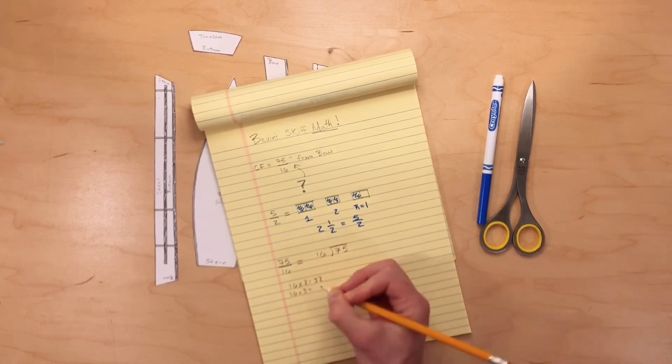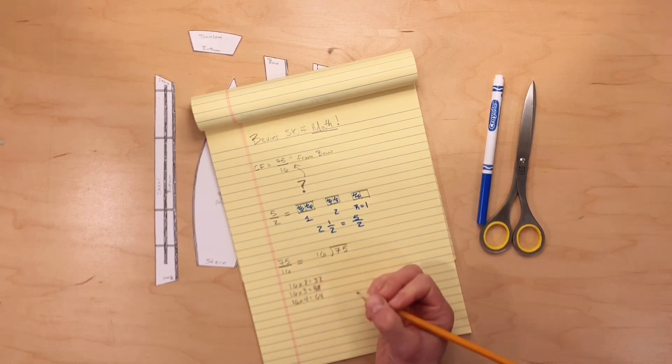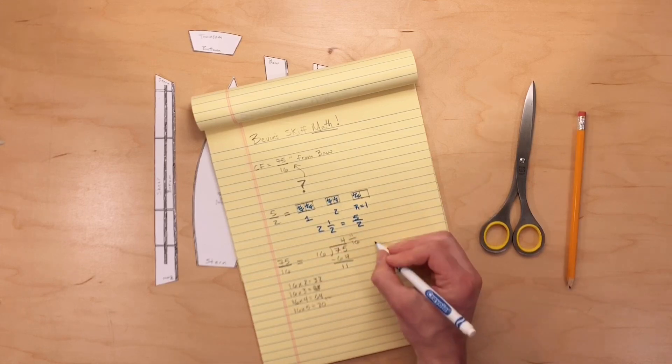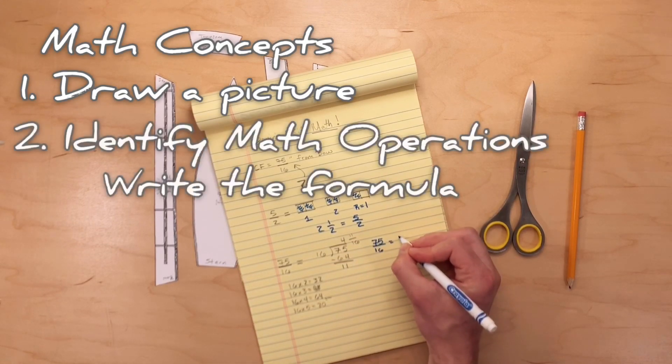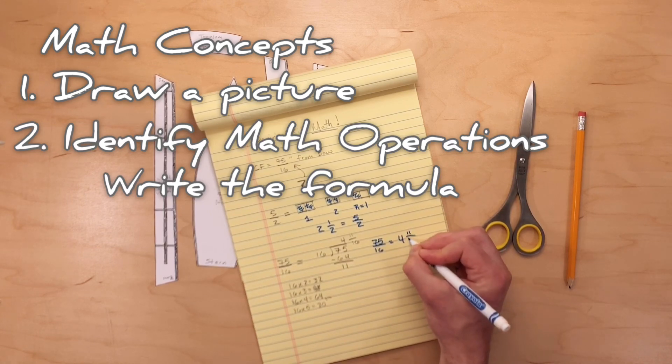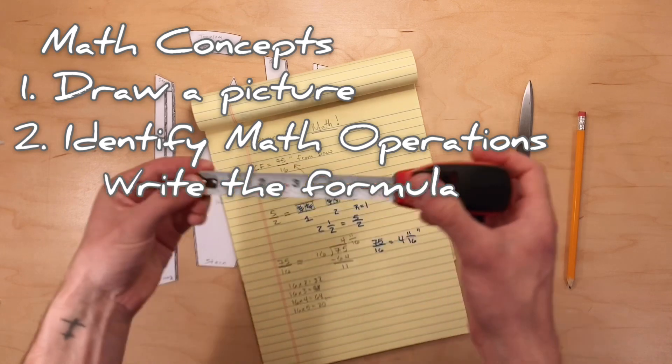Instead, I'm using long division. Don't worry if you haven't done long division in school just yet. Just remember these steps to help you get started. First, draw a picture if you can. Next, identify the concept you'll be using and write the equation. We knew we'd be using long division. Finally, calculate.